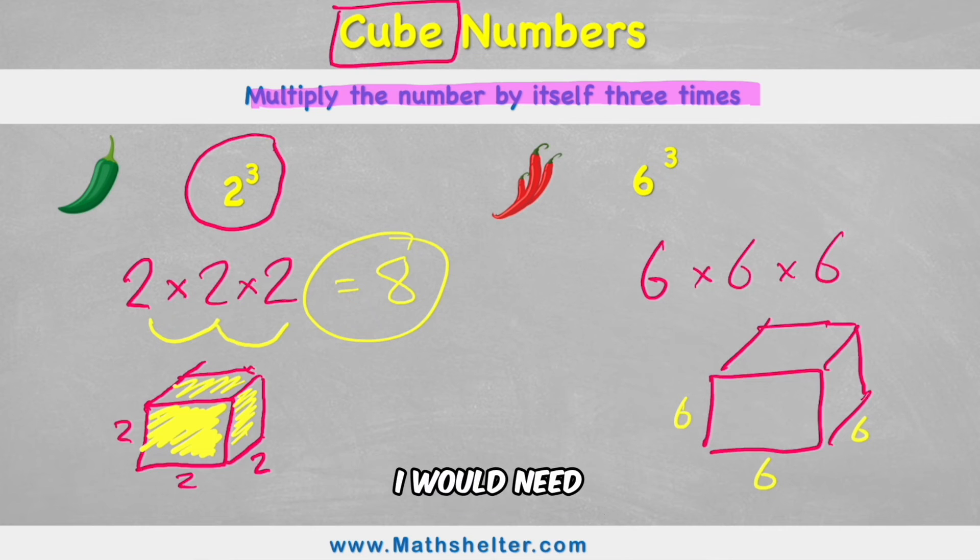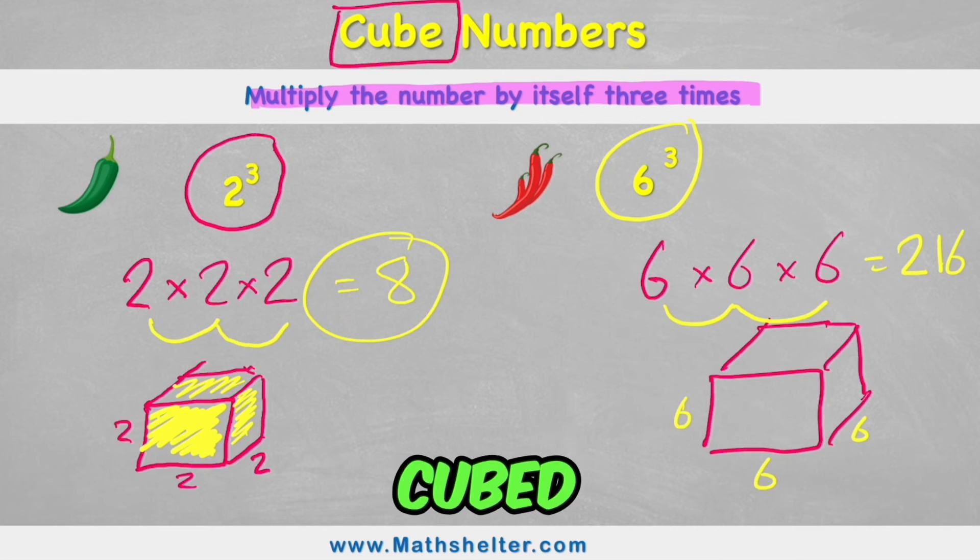So to find its volume, I would need to multiply all of these together. And six times six is 36. And 36 times six is a whopping 216. So six cubed equals 216.